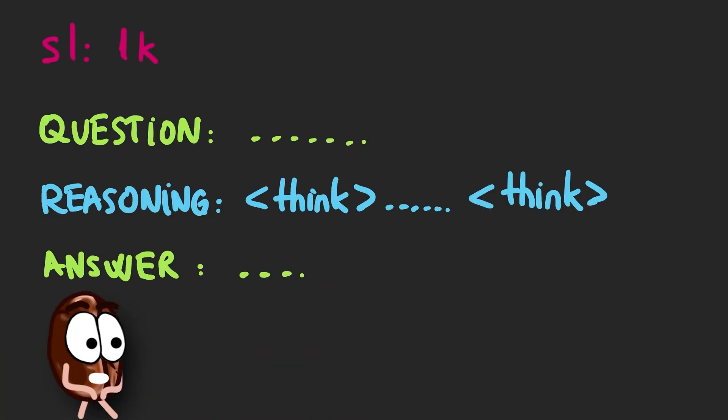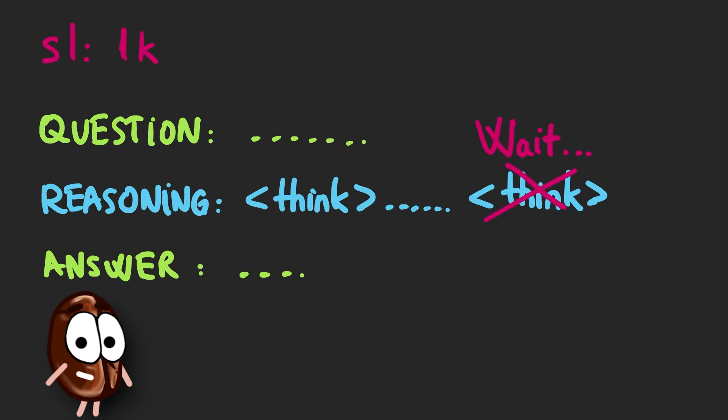But wait, there's more. The authors could improve this accuracy even further via test-time scaling, which sounds like a super complicated thing to do — but it's not. At inference time, when the model tries to stop reasoning too early, the researchers force it to continue by replacing the end-of-thinking token with the word "wait," after which the model, doing autoregressive generation, receives its own but modified output back as input to predict the next token. And after "wait," the next most likely thing is to continue the generation and not to stop.